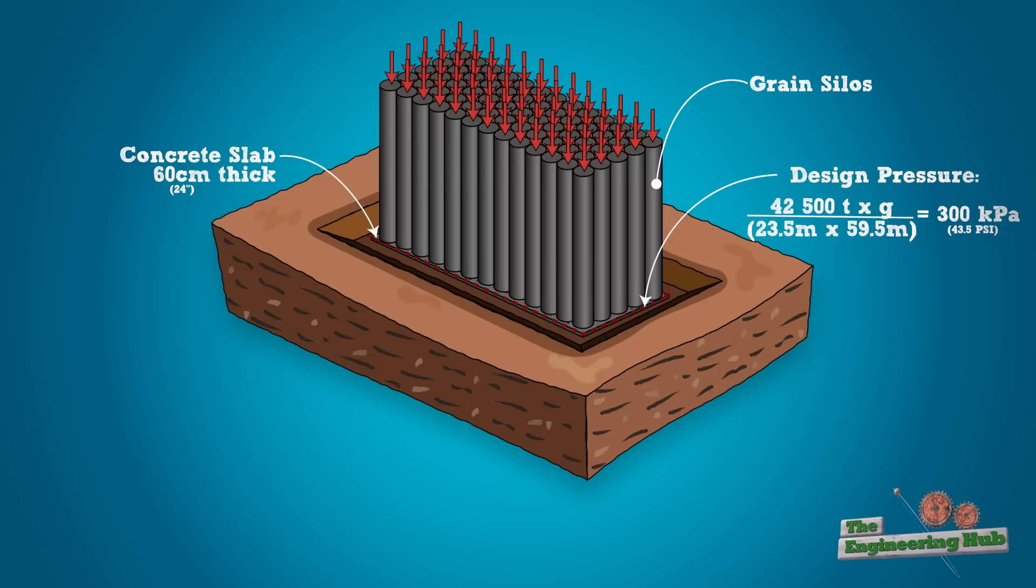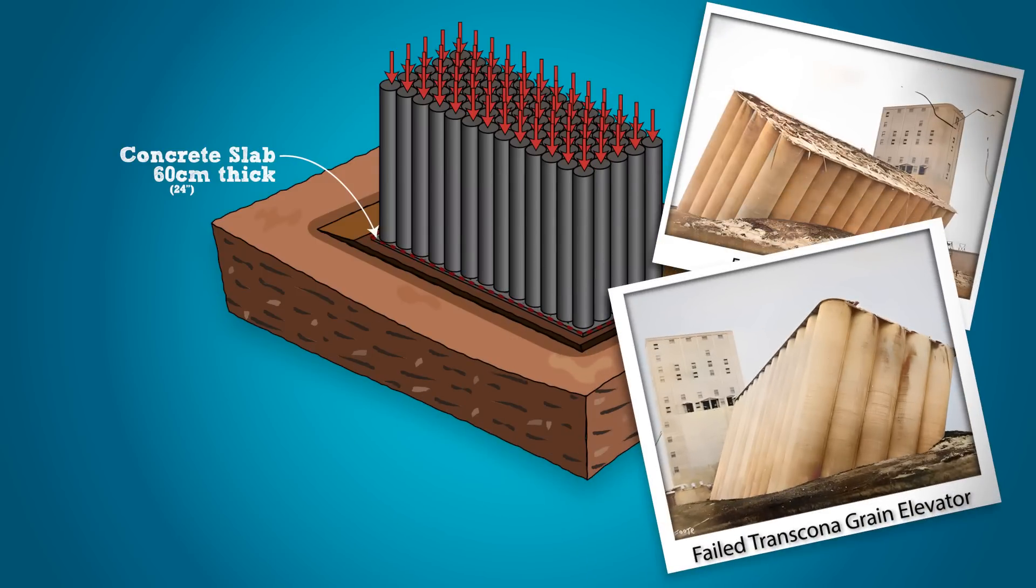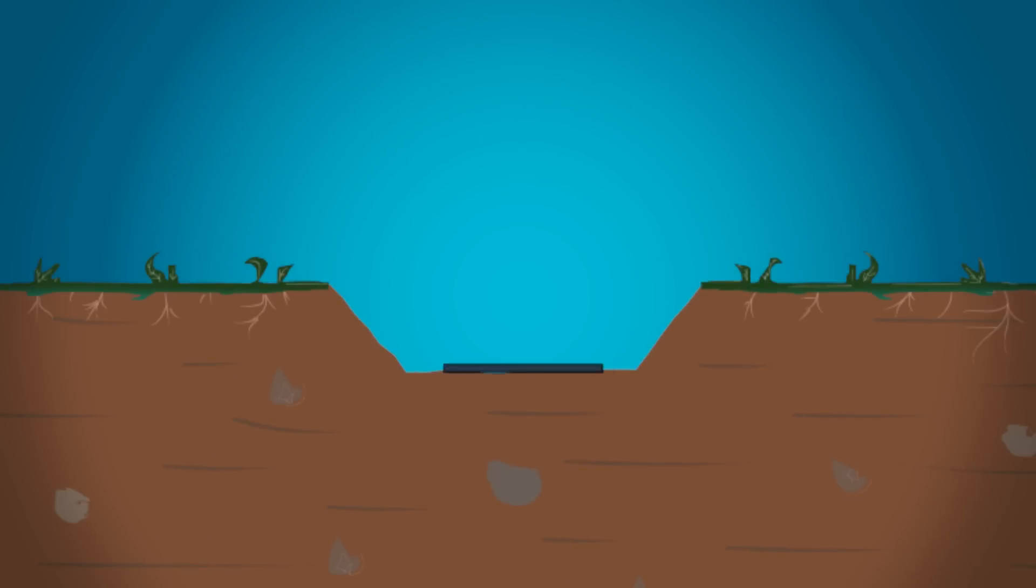This meant the distributed pressure to the ground would be around 300 kPa, well below the 400 kPa failure load repeatedly obtained from the plate loadings. In reality, the structure failed at 87.5% grain capacity with an estimated bearing failure pressure of 296 kPa, an error of more than 25%.